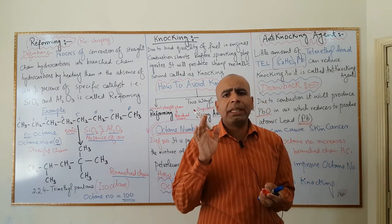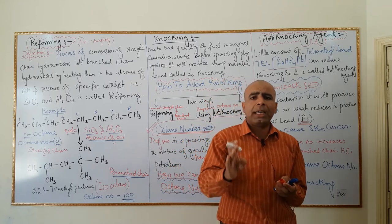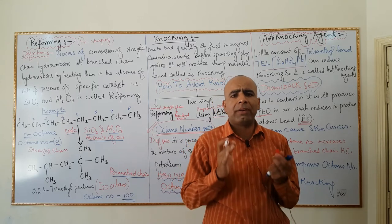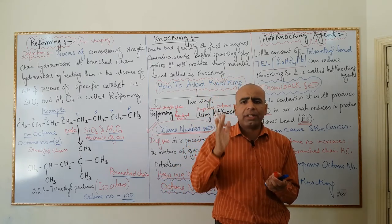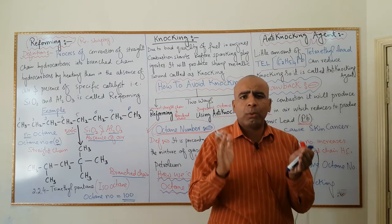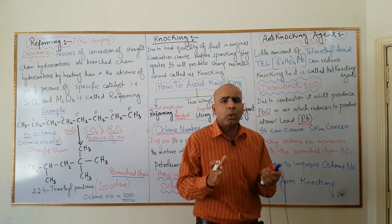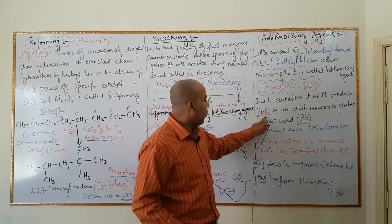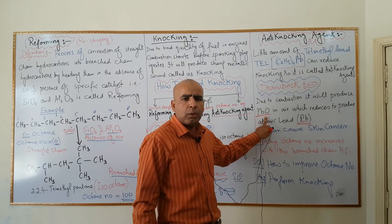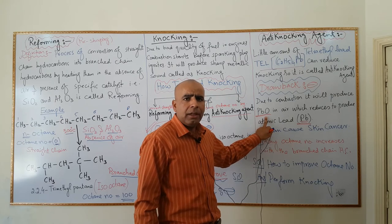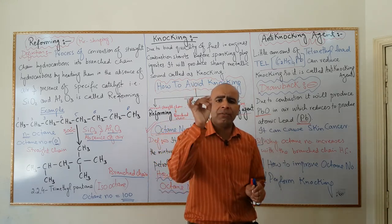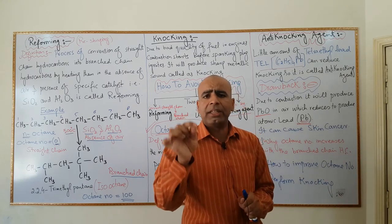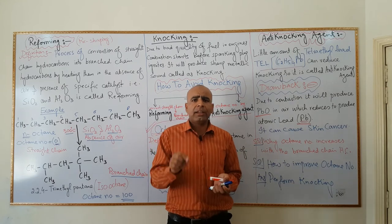This lead monoxide is released into the air through the exhaust pipe or silencer of the vehicle. Once in the air, reduction of lead monoxide takes place and atomic lead is produced. This atomic lead has a very serious disadvantage: it causes skin cancer.